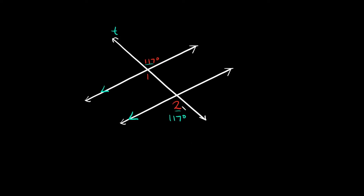Now if you notice, angle two right here is in the same position as angle one. If you look at this cross, we basically have top left, top right, bottom left, bottom right — and if you look at this same cross over here, we have top left, top right, bottom left, bottom right. They're both in the bottom left, so that means these are corresponding angles. Since they're corresponding angles, that means they're congruent. So if this is 117 degrees, that means angle one over here is also 117 degrees.